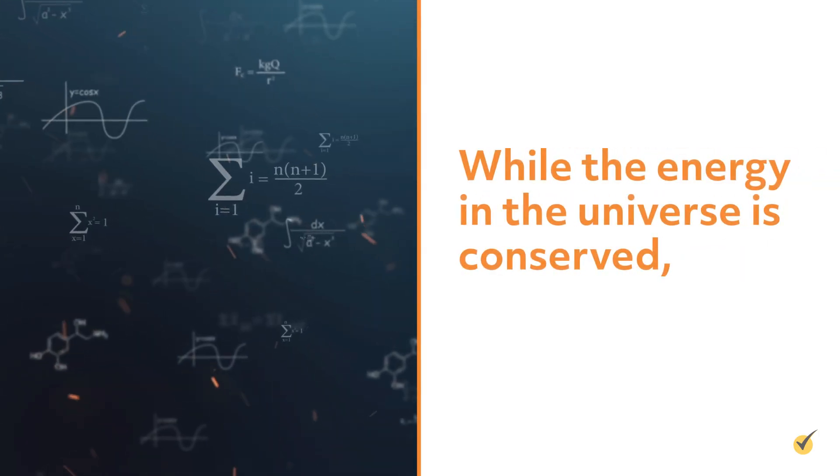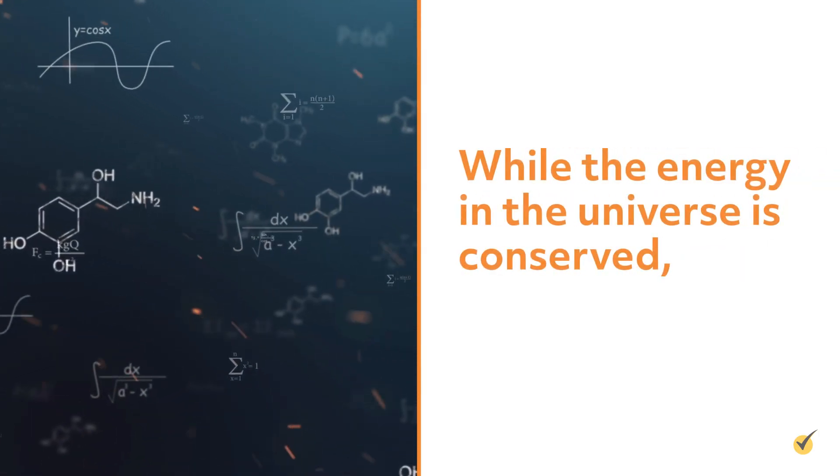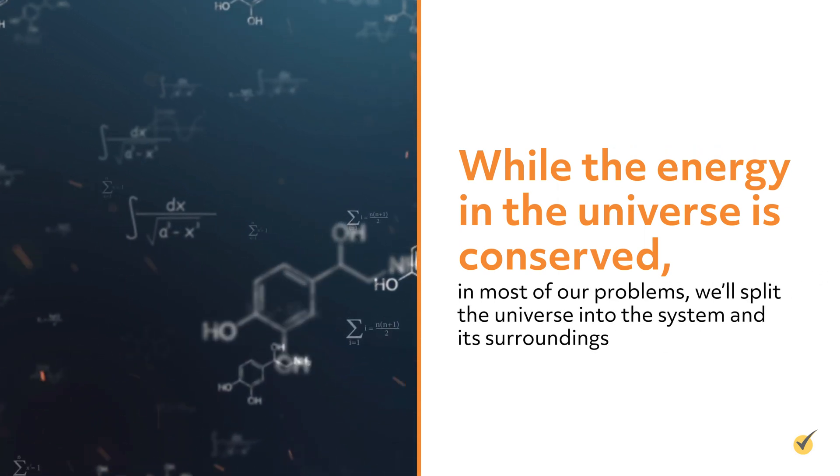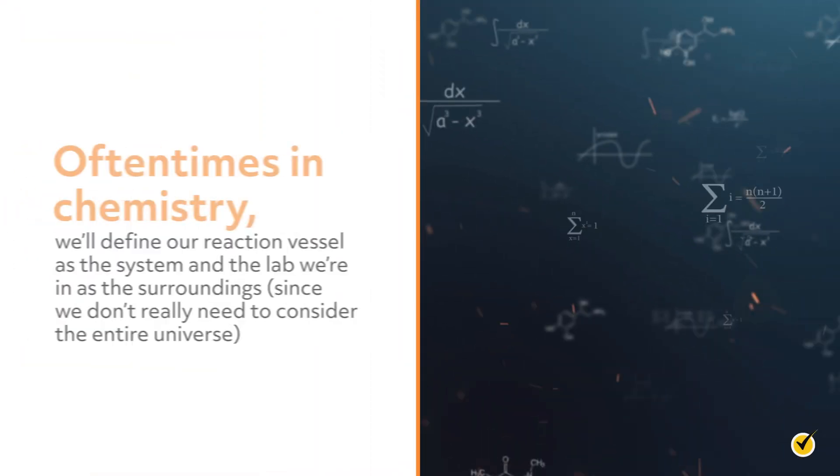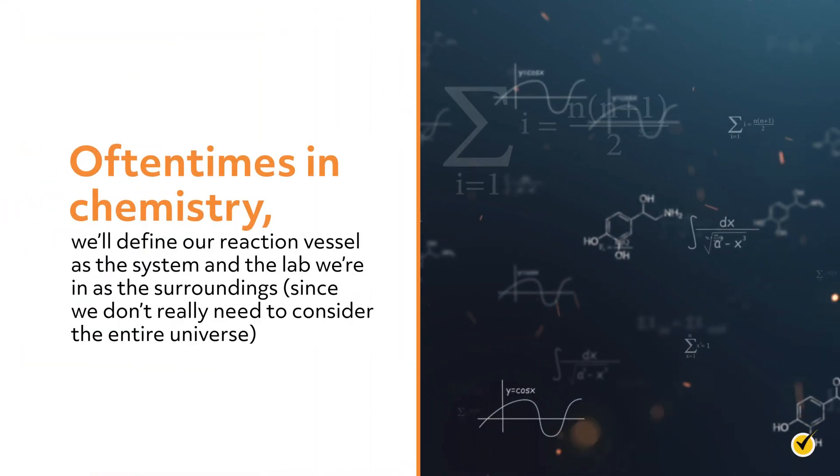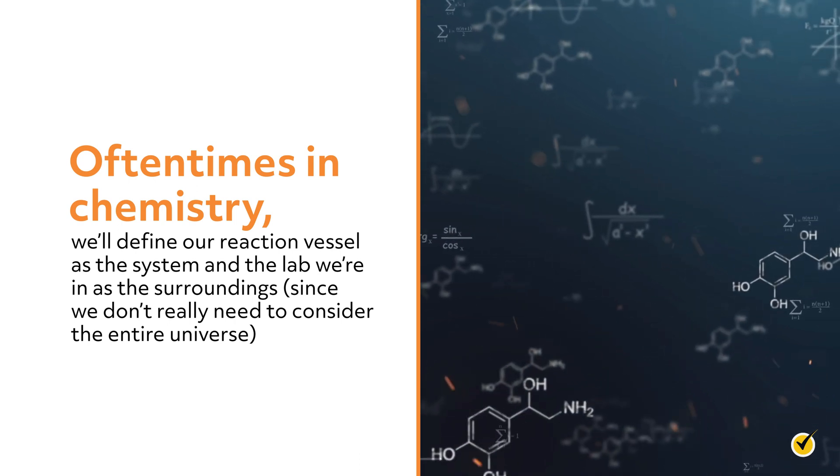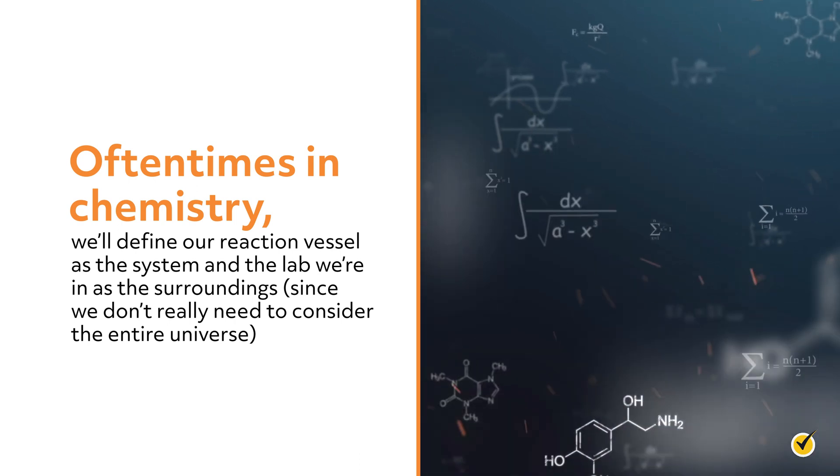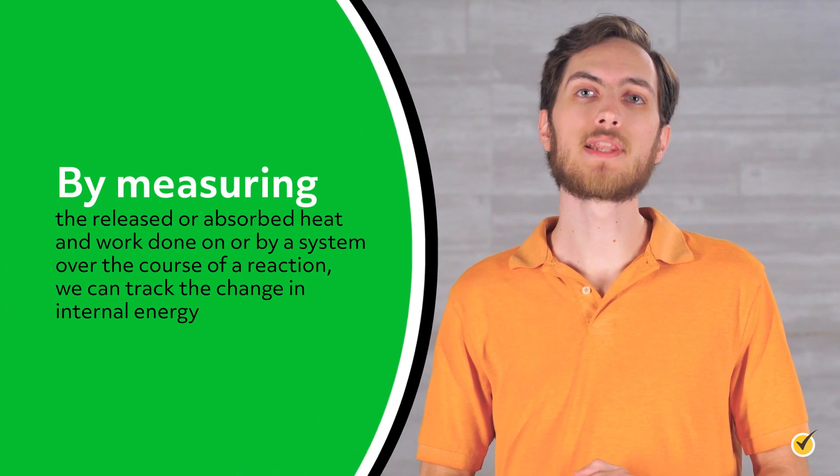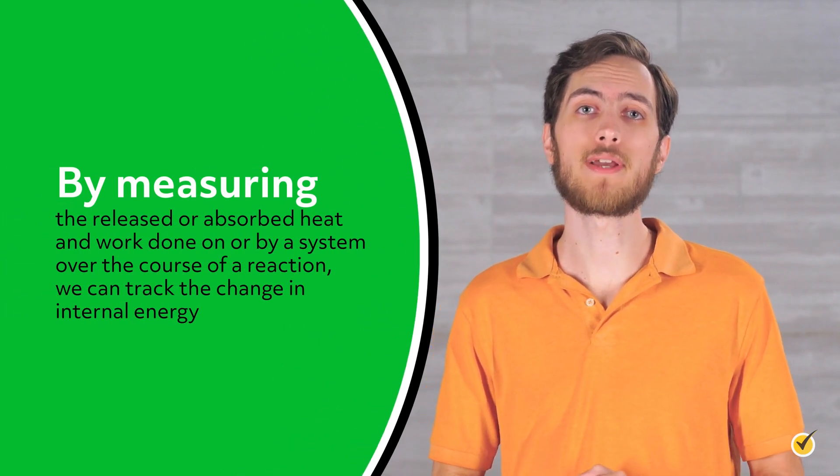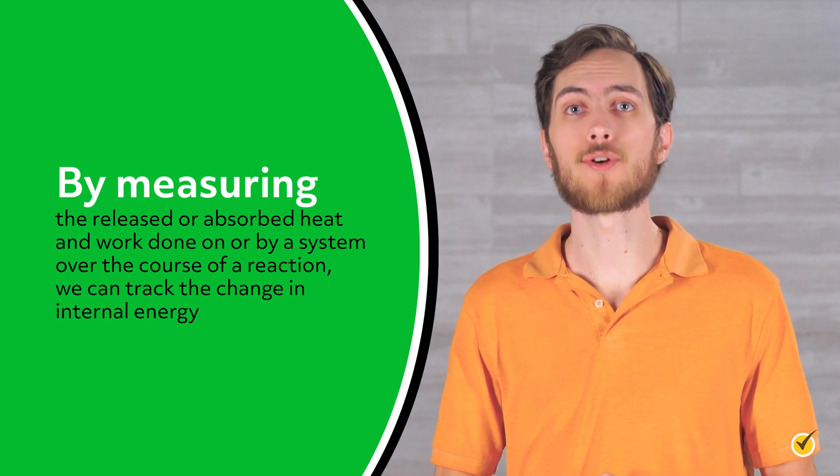And we should remind ourselves of a second point here. While the energy in the universe is conserved, in most of our problems we'll split the universe into the system and its surroundings. Oftentimes, in chemistry, we'll define our reaction vessel as the system and the lab we're in as the surroundings, since we don't really need to consider the entire universe. So, by measuring the released or absorbed heat and work done on or by a system over the course of a reaction, we can track the change in internal energy.